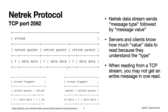An important thing here is that servers and clients know how much data there is based on the type. So if you receive a type message — for example, if the type is type number three — then you know how many bytes of data to read in order to fill up that Nettrek packet.